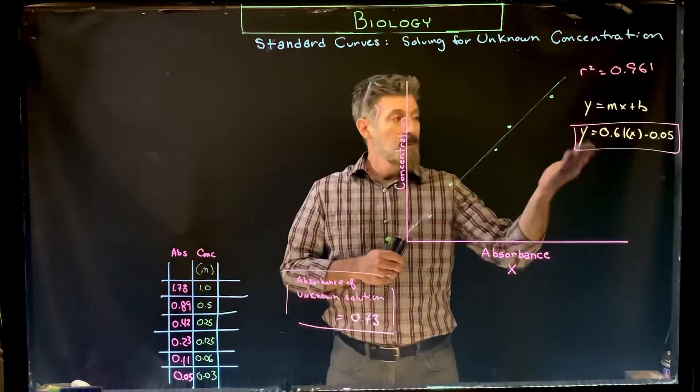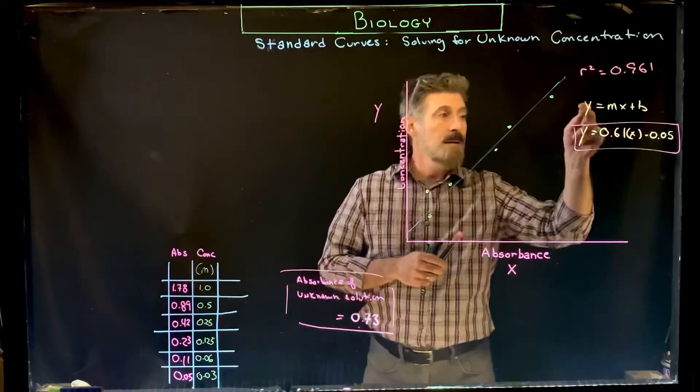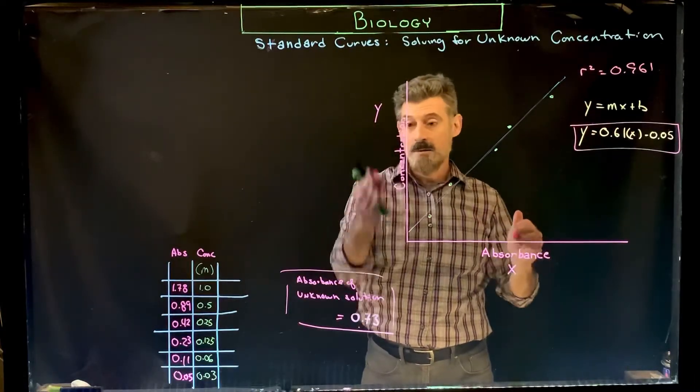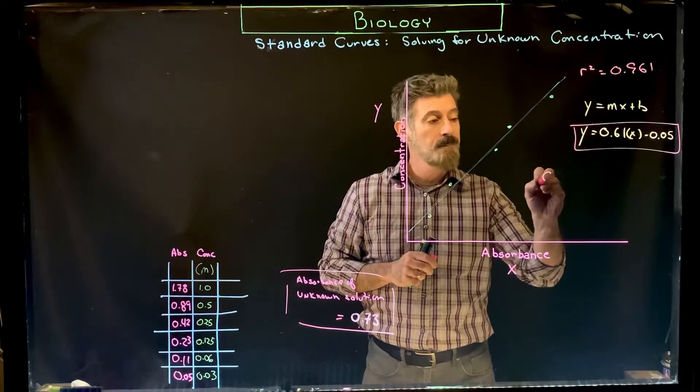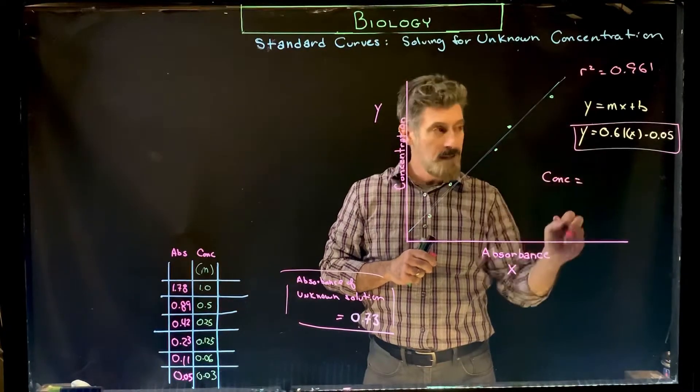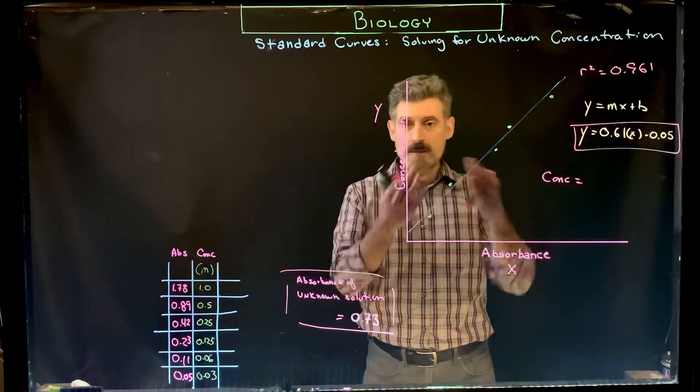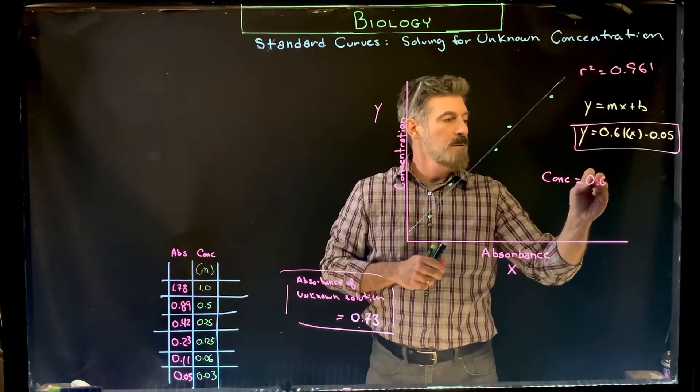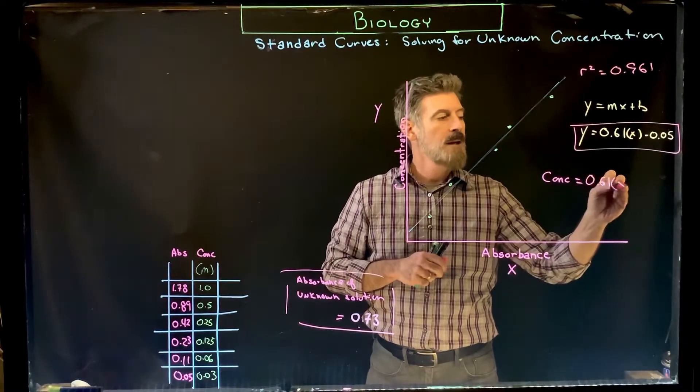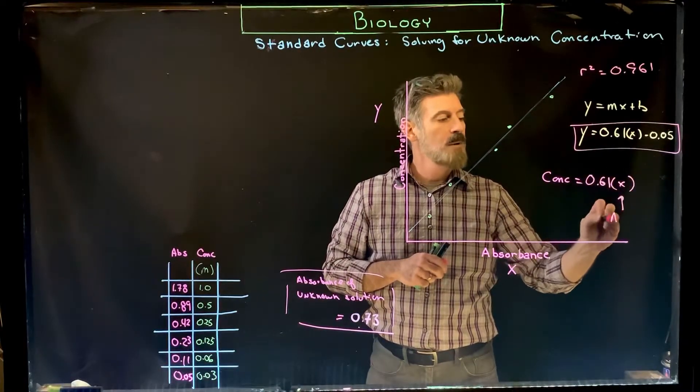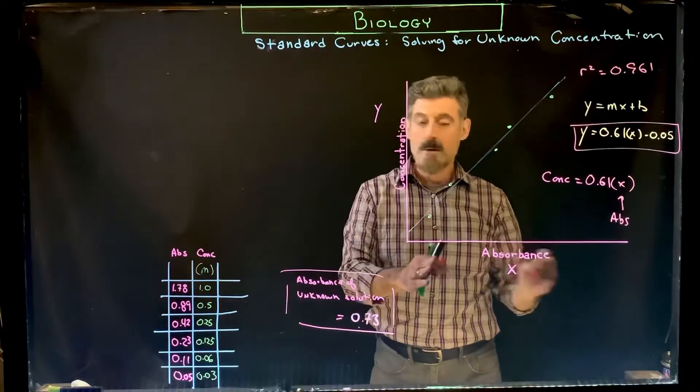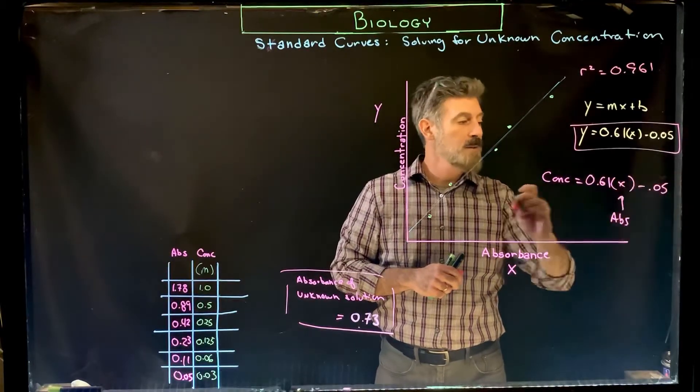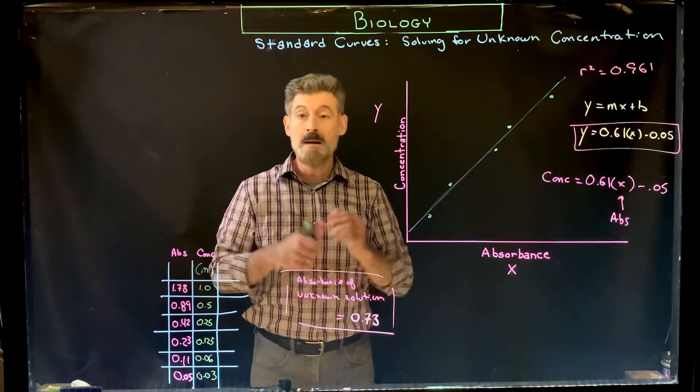Now then you have this equation which we could use. In this case, the y stands for our concentration. It's here on the axis, so that means concentration equals, if we write it in this way, if we set it up, in this case it's 0.61. This is just a random example I just came up with. X stands for the absorbance, so absorbance is on the x-axis, minus 0.05.